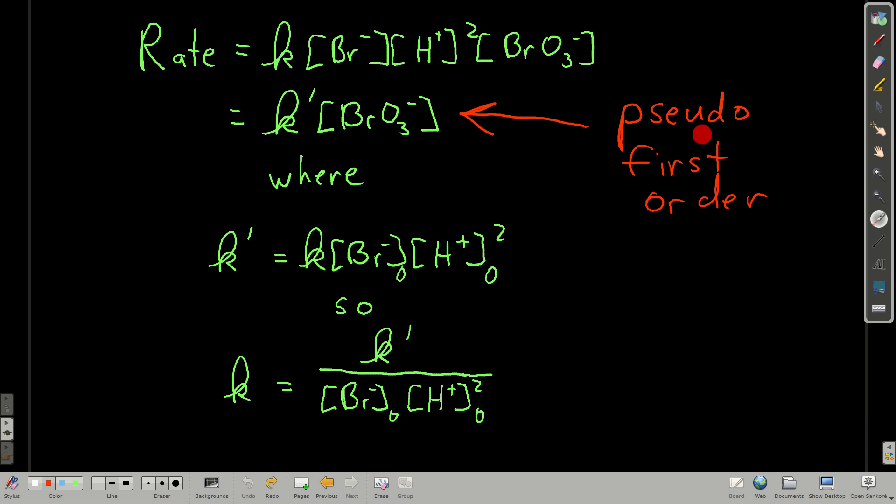We call it pseudo first order because we had to force it to be that way by playing with the initial concentrations. But it is. So if we were to plot the natural log of the concentration of bromate versus time for this reaction, for this experiment, we would get a straight line.